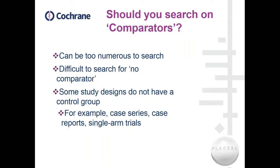Next we move on to the comparators, and these are again rarely searched. They can be too numerous to search, particularly if you're searching for any comparator. If you're also including no comparator, that's almost impossible to search for. As you'll see when we come on to study designs, not all study designs have a control group and therefore have a comparator — for example, case series, case reports, single arm trials, etc.